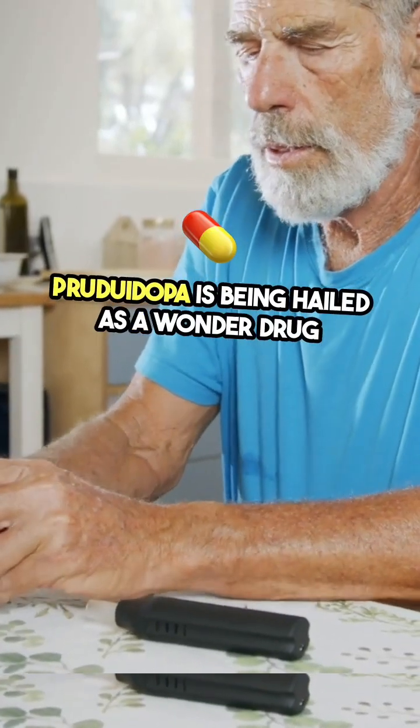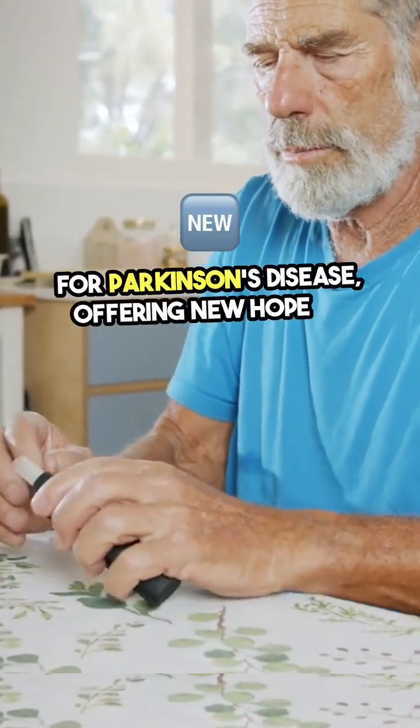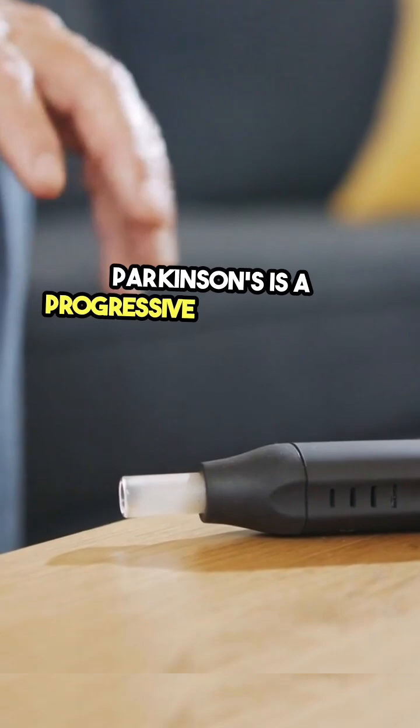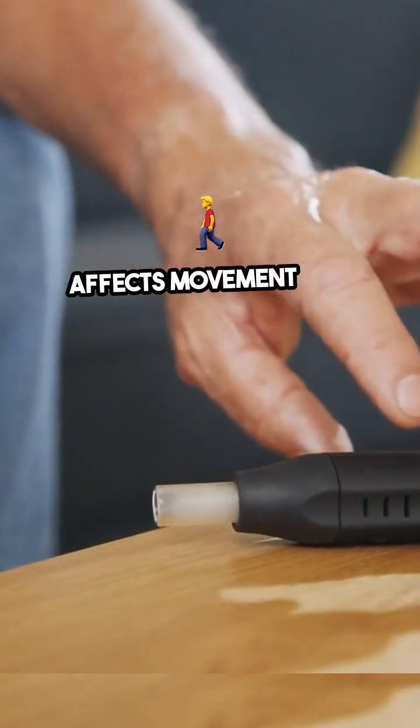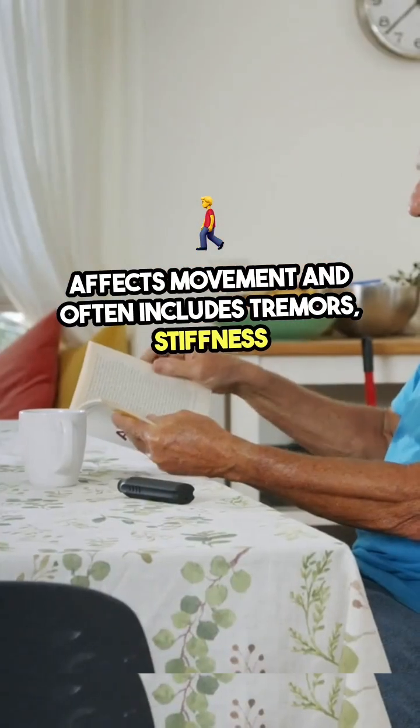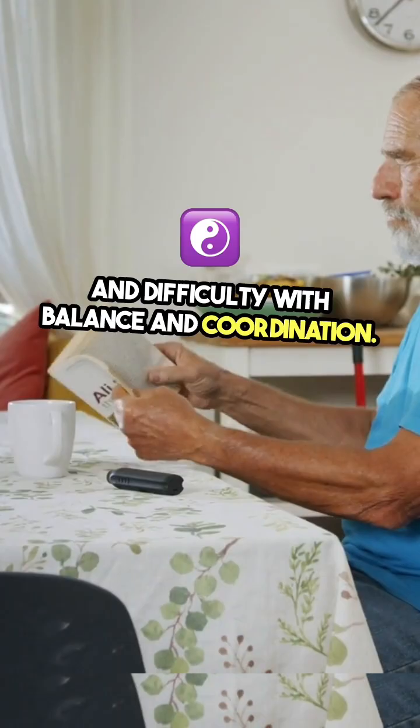Prudiodopa is being hailed as a wonder drug for Parkinson's disease, offering new hope to patients. Parkinson's is a progressive neurological disorder that affects movement and often includes tremors, stiffness, and difficulty with balance and coordination.